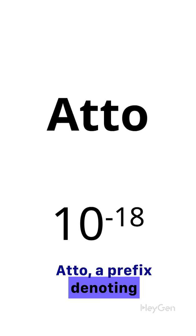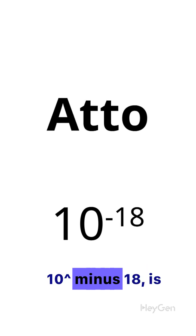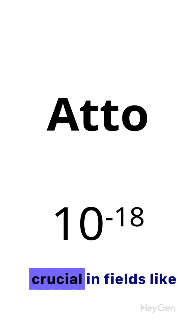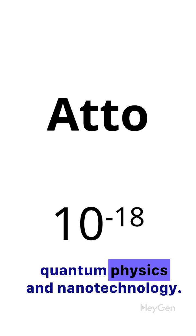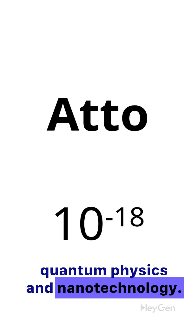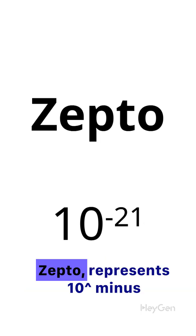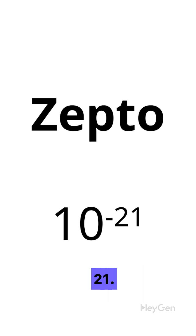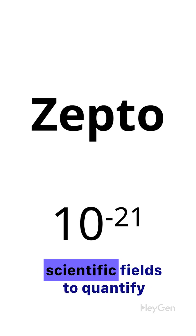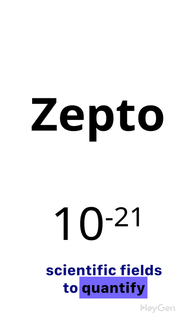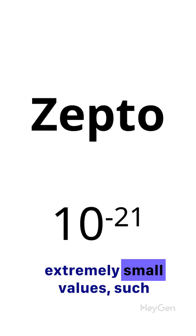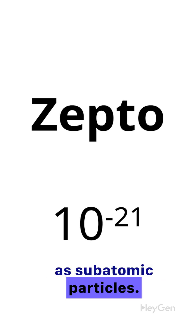Atto, a prefix denoting 10^-18, is crucial in fields like quantum physics and nanotechnology. Zepto represents 10^-21. It is used in scientific fields to quantify extremely small values, such as subatomic particles.